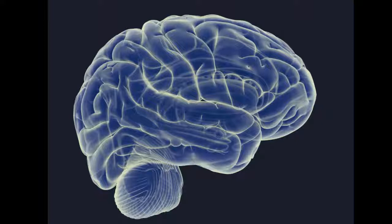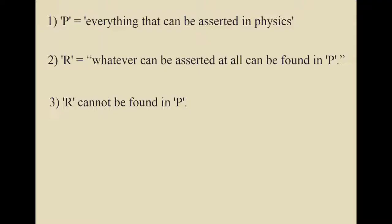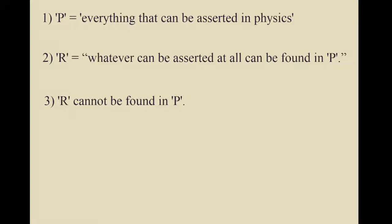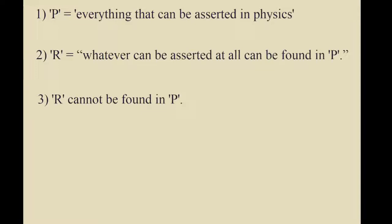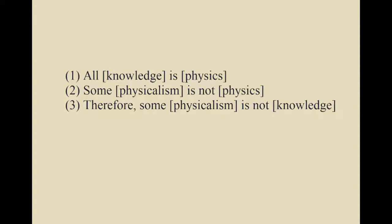But we shall use Kirk's terms to highlight this paradox. Let P designate everything that can be asserted in physics. Let R designate the proposition, whatever can be asserted at all can be found in P. R cannot be found in P. We can formulate this problem using classical logic. All knowledge is physics. Some physicalism is not physics. Therefore, some physicalism is not knowledge.